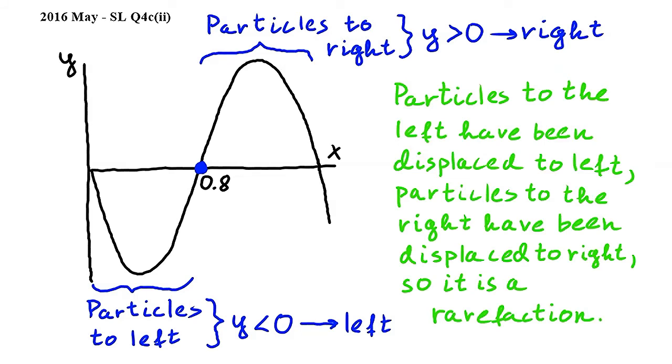In order to earn the two marks on this question, you should explain the displacement of the particles to the left and to the right, and conclude that this means that our particle is at the middle of a rarefaction.